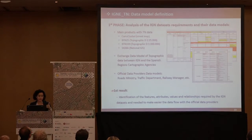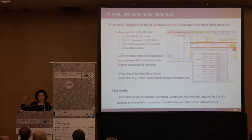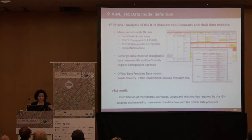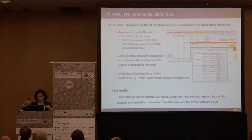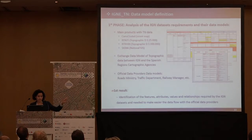We split the work into several phases. The first phase was just to analyse. We had to analyse the different data models of all our products and map one with another to detect common feature types, attributes or requirements. We also took into account the exchange data model on topographic data between IGN and the Spanish Regional Cartography Agencies, to assure and maintain the data flow with them. We also identified the most important official providers regarding transport, like the road ministry or the railway manager, to keep data flow with them as well.